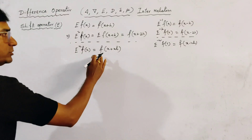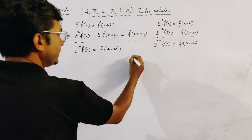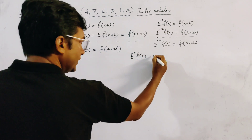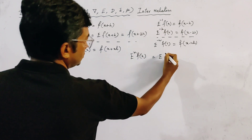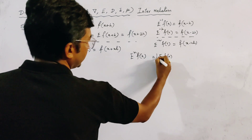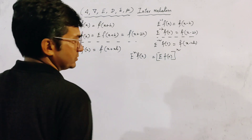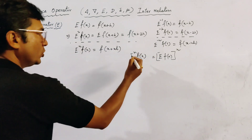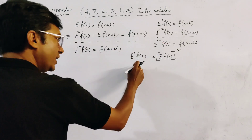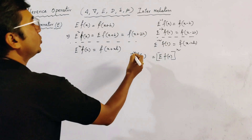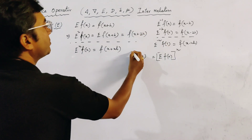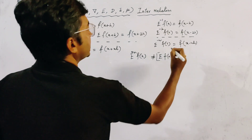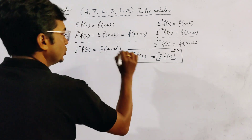It is clear from these two relations that E to the power n of f(x) is not the same as [E f(x)] to the power n. This result is not correct. Similarly, we can write E to the power ±n is not equal to [E f(x)] to the power ±n. This result is not true.